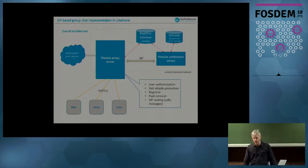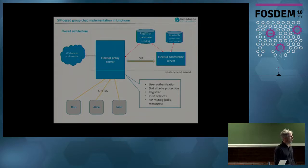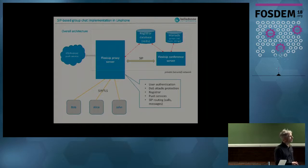Here is the big picture of our architecture. We have three clients — Bob, Alice, and John — connected to a FlexiSIP proxy server over SIP TLS. The proxy's main tasks are user authentication, DOS attack protection, registration, and integration with iOS and Android push services, and of course routing requests to user agents or other proxies. This proxy is connected to a registration database — in our case, the Redis distributed hash table. Our FlexiSIP conference server runs on a protected network behind the FlexiSIP proxy server.